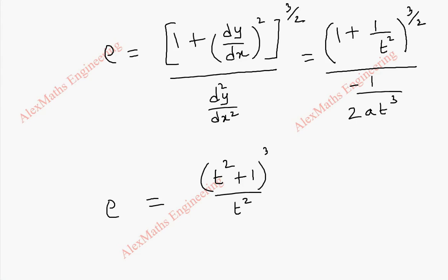And this will get multiplied in the numerator. That is 2at³ by minus 1. We can cancel this and this. This is t³. So this t³ and this t³ we can cancel totally.